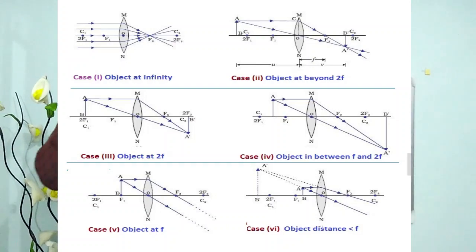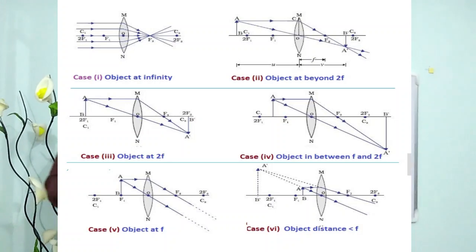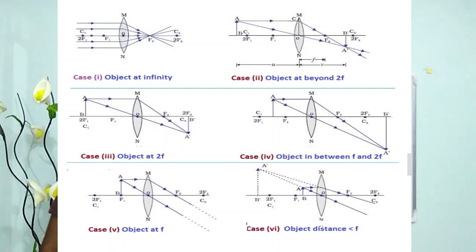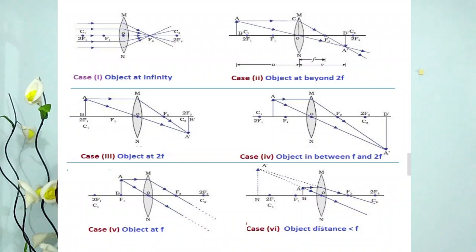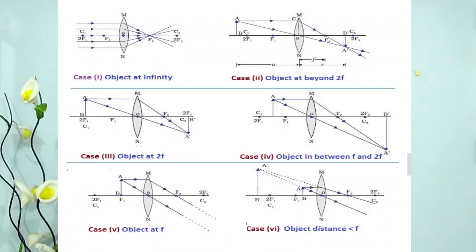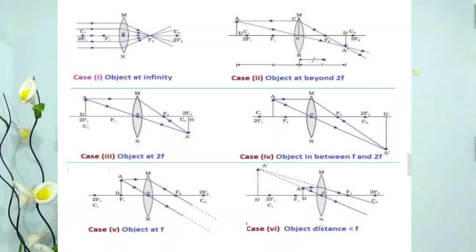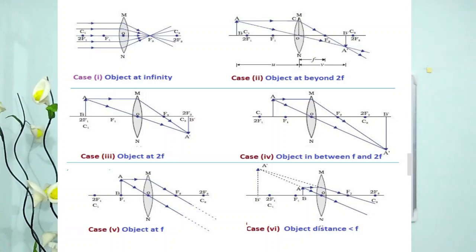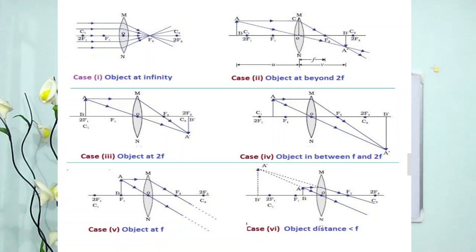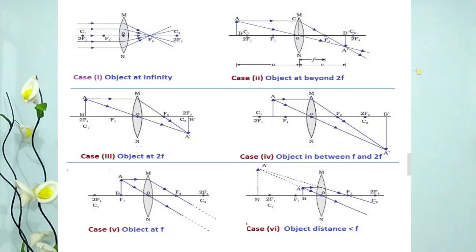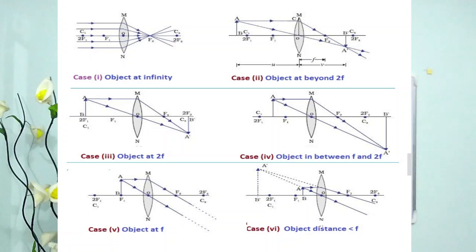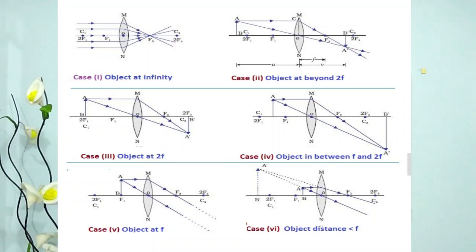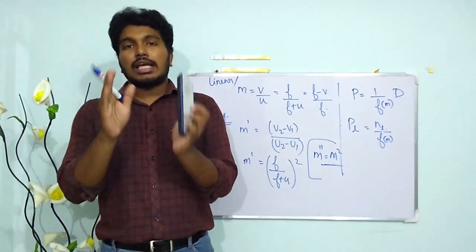When the object is placed between C and F, the image forms beyond C — it is real, inverted, and enlarged. When the object is placed at F, the image is at infinity. Conversely, for an object coming from infinity the image is at F. This condition is very important and will be used again in wave optics — in Young's double slit experiment and in diffraction. When the object is between F and O, we get a virtual, erect image.